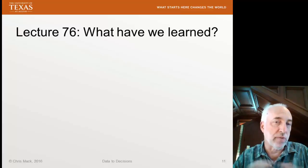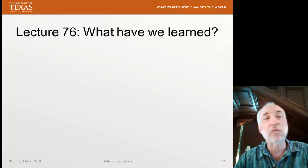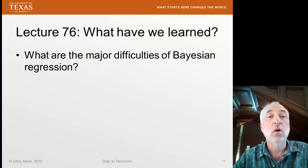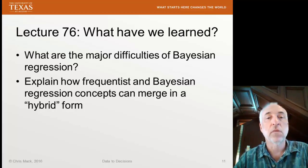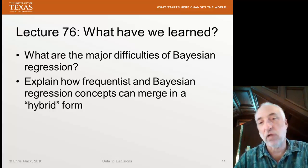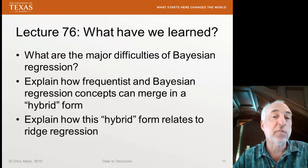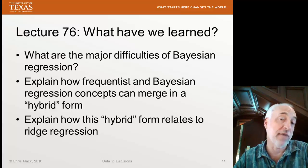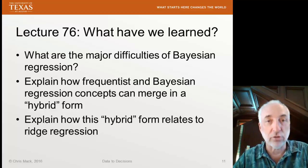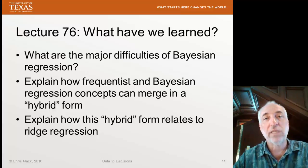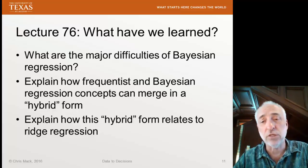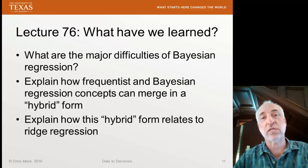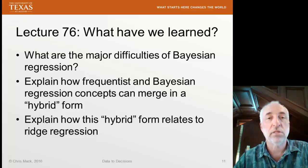What have we learned in lecture 76? You should be able to answer: what are the major difficulties in Bayesian regression (I listed three); explain how frequentist and Bayesian regression concepts merge in the hybrid form described; and explain how this hybrid form relates to ridge regression and how it becomes ridge regression under a special case. That's our third lecture on Bayesian regression. In our next and final lecture in this series, we'll actually use R to perform some regressions.